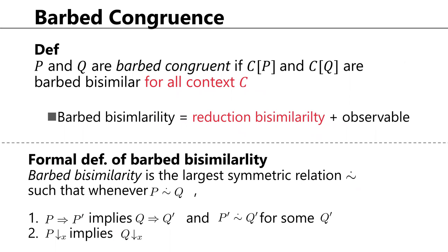We say p and q are barbed congruent if, for all contexts c, cp and cq are barbed bisimilar, where barbed bisimilarity is reduction bisimilarity with observables taken into account. The formal definition of barbed bisimilarity is exactly the same as the standard definition, except we use the new reduction relation for transitions. Technically, the notion of barb also needs a slight modification, but that can be done in a straightforward manner.